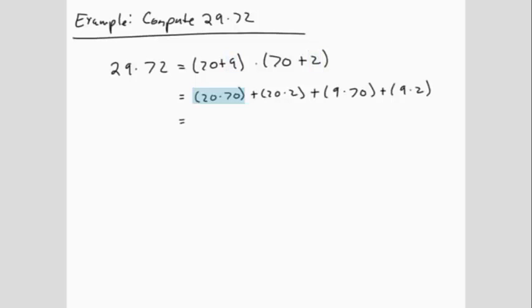20 times 70 is 1400, plus 20 times 2 is 40, plus 9 times 70 is 630, plus 9 times 2 is 18. 1400 plus 40 is 1440, plus 630 is 2070, plus 18 more is 2088.